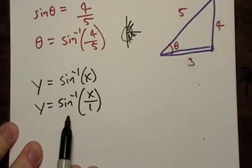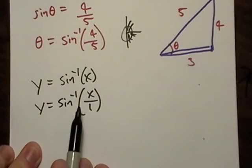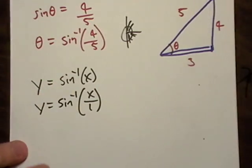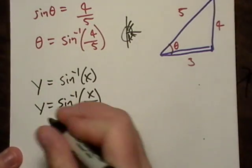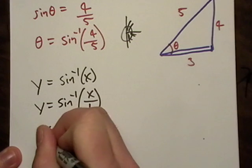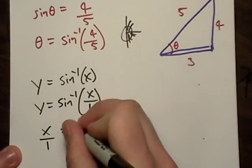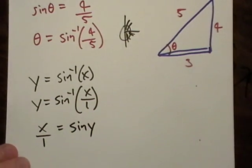If I wanted to switch this around and undo it, I'm going to basically have x/1 equals sine of y. Sine of angle y is x over 1.